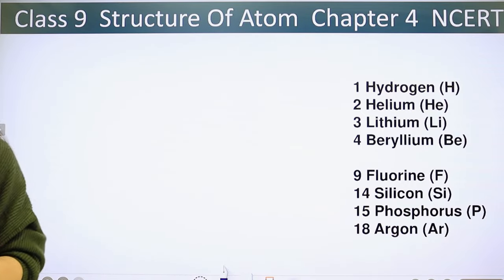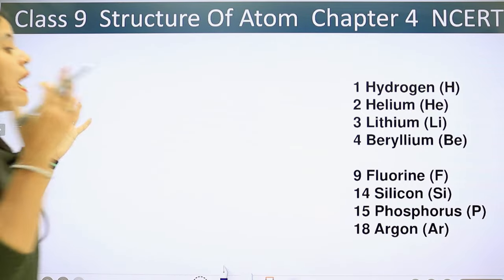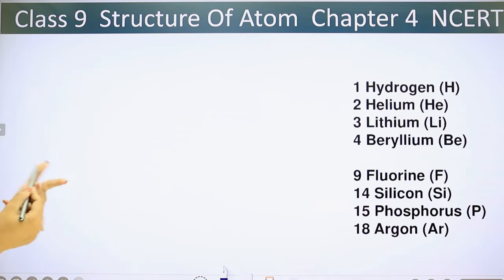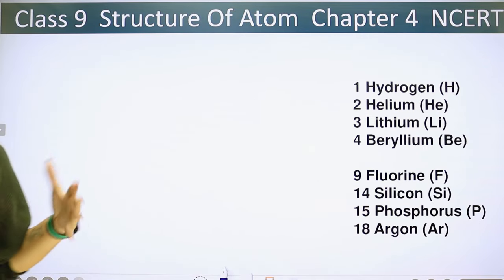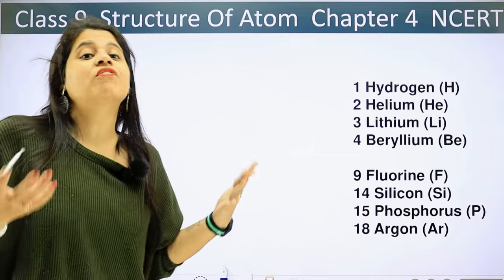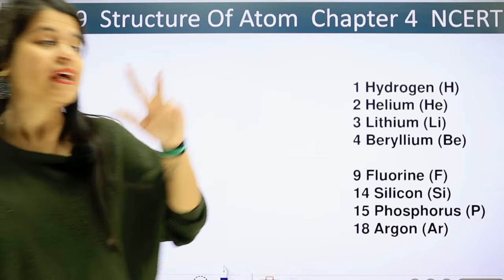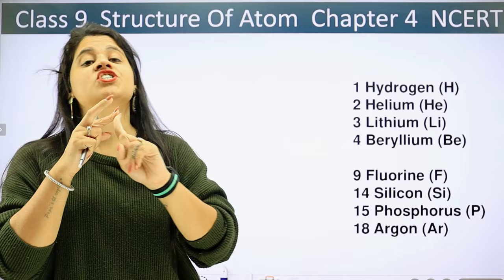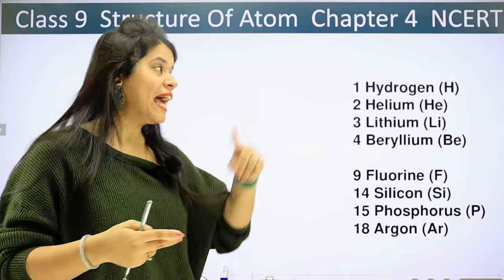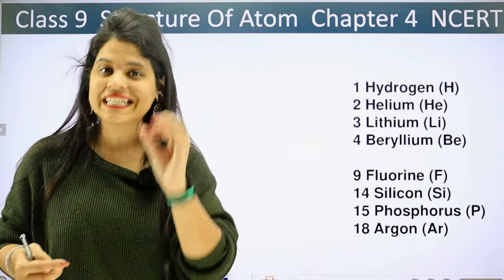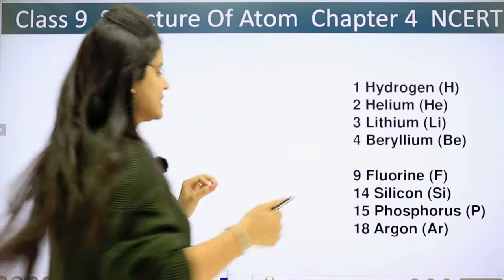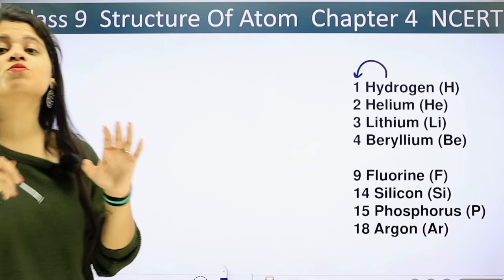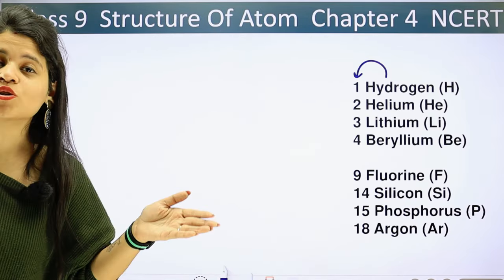First, we will talk about hydrogen. You will have heard of hydrogen, helium, lithium, beryllium. We need to know how many electrons each has. The number of electrons is always equal to the number of protons, and that is its atomic number. If we talk about hydrogen, the atomic number is 1, so the number of electrons is also 1.